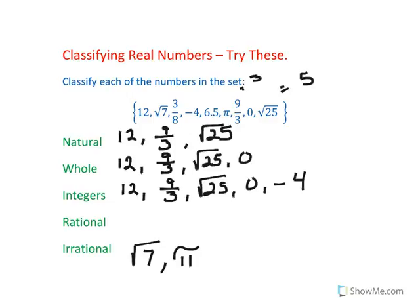And the rational numbers are everything else. So we have 12, we have 3 over 8, negative 4, 6.5 which can also be written as a fraction, 9 over 3, 0, and square root of 25.